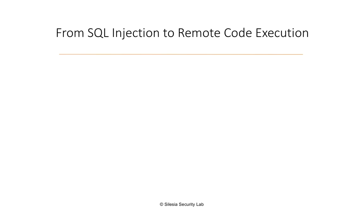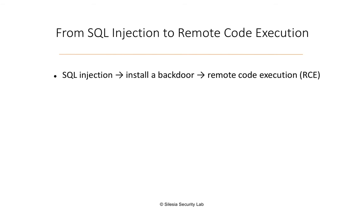Welcome back guys! Let me now show you how you can go from SQL injection to remote code execution. Here is the sequence of steps: as a result of SQL injection we are going to install a backdoor, and once the backdoor is installed we are going to launch a remote code execution attack via this backdoor — and basically this is how it works.